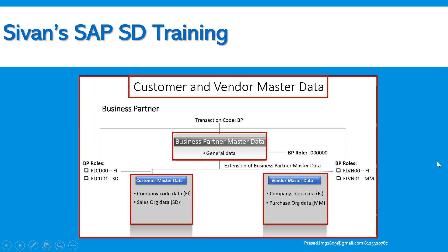In the Business Partner transaction code, we can create the same customer as a vendor and vendor as a customer. We need to include the roles while creating the business partner. Here we can see the business partner master data — the general data remains the same for both. However, the BP roles to create customer master data include FI company code data and sales organization data. Similarly for vendor master data, the company code data for FI purpose and purchasing order data for MM purpose use roles FLVN00 and FLVN01. This is how we need to select the role while creating the business partner.